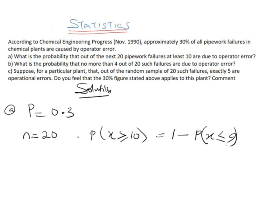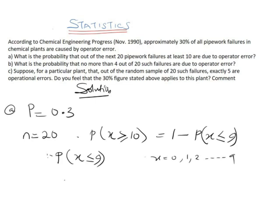That is 1 minus the probability of x less than or equal to 9, covering all values from 0 to 9. So what we need to find is P(X ≤ 9), which is the summation of binomial probabilities for x = 0, 1, 2, all the way up to 9.